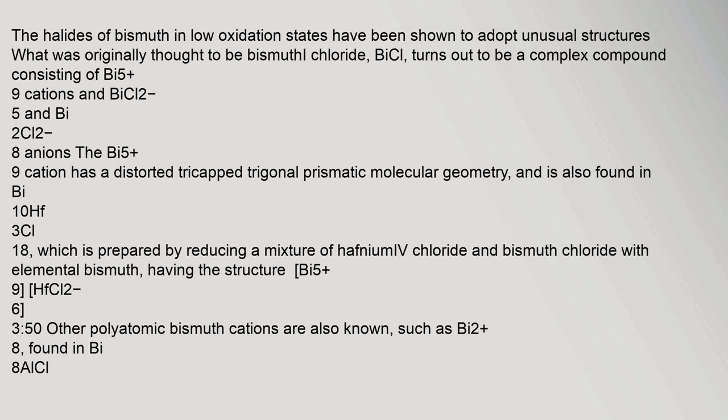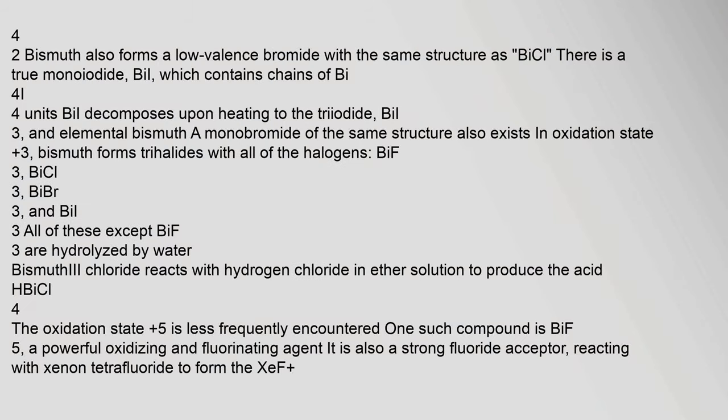The halides of bismuth in low oxidation states have been shown to adopt unusual structures. What was originally thought to be bismuth(I) chloride turns out to be a complex compound consisting of Bi₅⁹⁺ cations and bismuth(II) chloride anions. The Bi₅⁹⁺ cation has a distorted tricapped trigonal prismatic molecular geometry. Bismuth also forms a low-valence bromide with the same structure as bismuth(I) chloride.